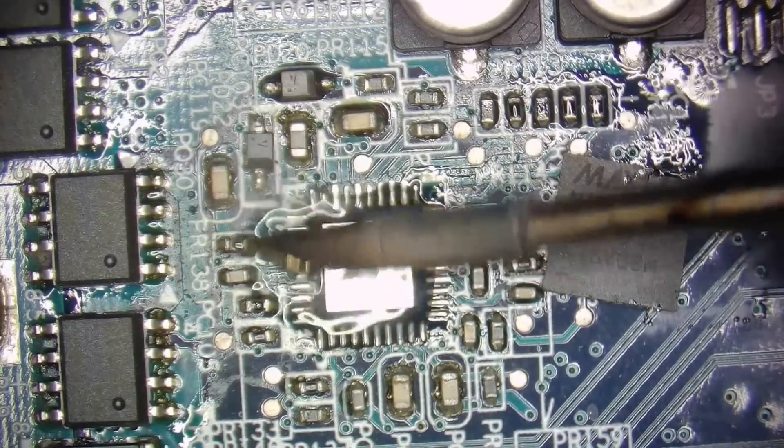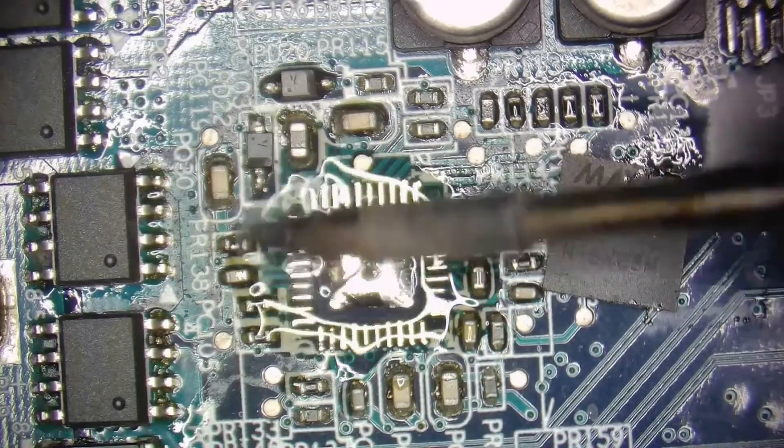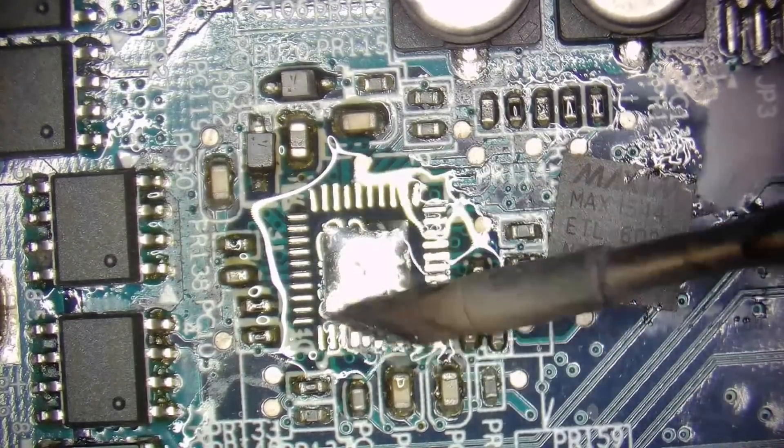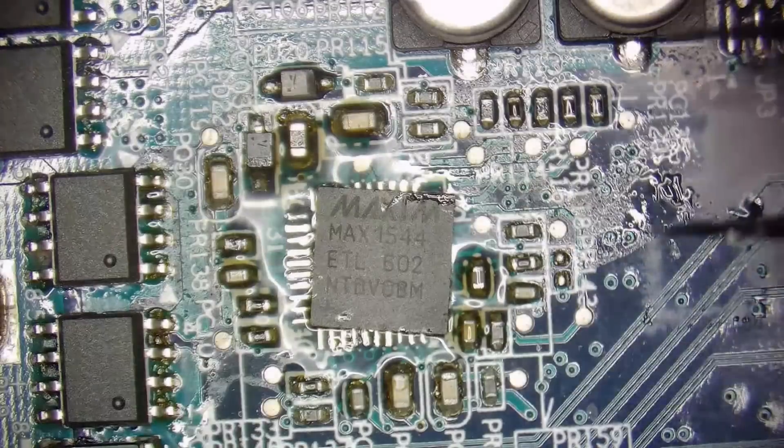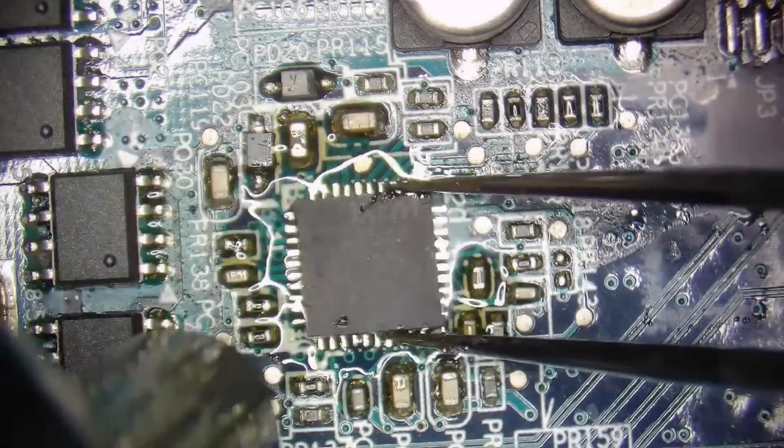Then apply some flux to touch up the pads on the board with a soldering iron and a little blob of leaded solder. Before soldering, you try to align the chip as best as possible and then you want to push on it while heating for two main reasons.